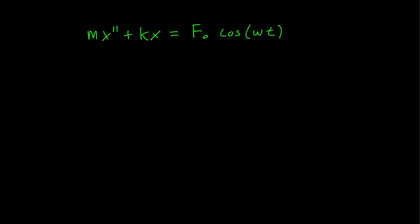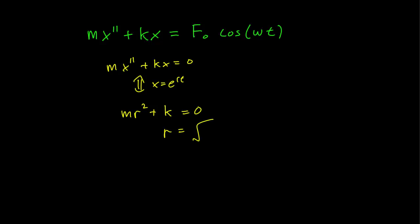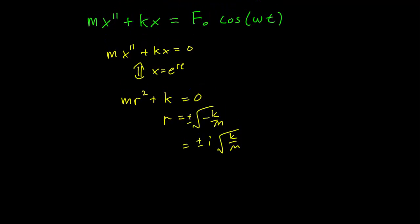To do that, we first have to solve the homogeneous equation. The homogeneous equation is mx'' plus kx equals zero. We make our usual substitution x equals e^(rt), to get mr² plus k equals zero. This gives us r equals plus or minus i times the square root of k over m.